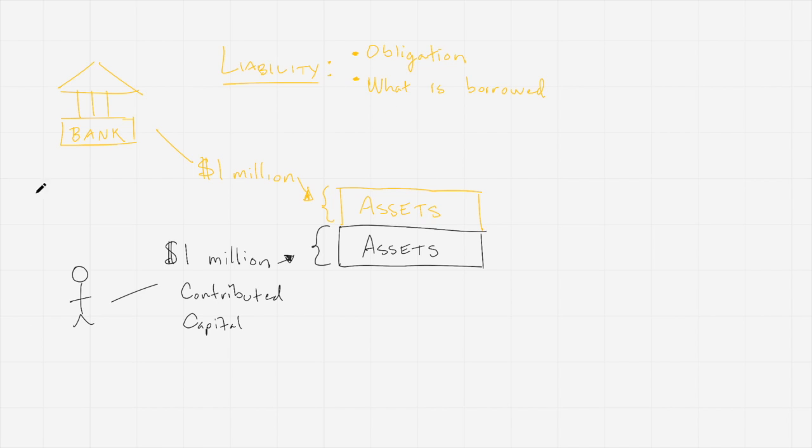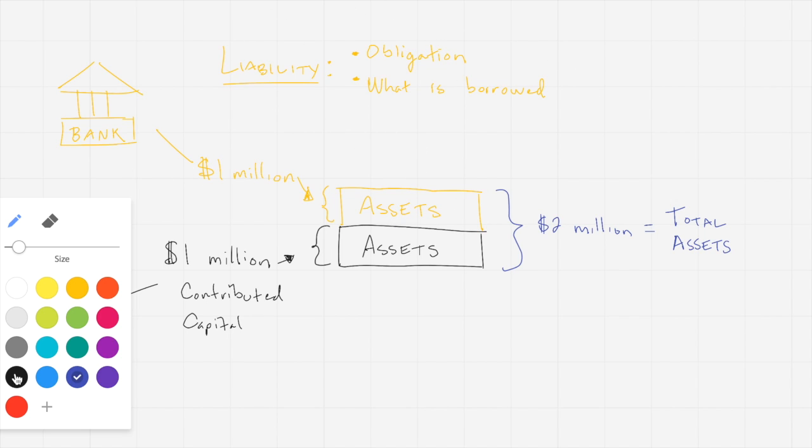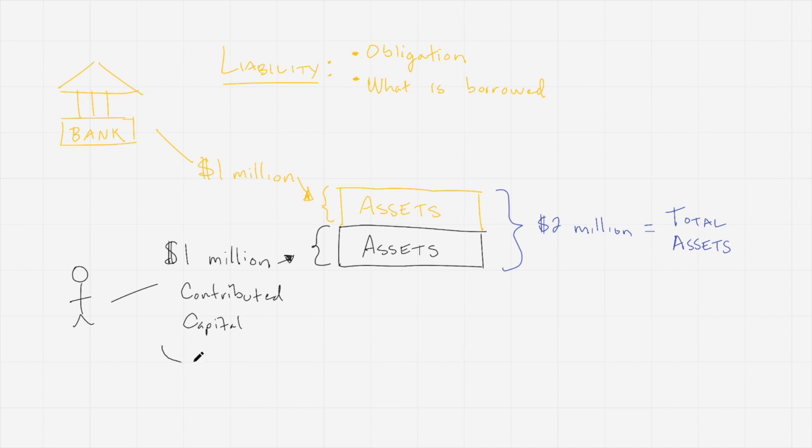So we now have two million dollars in total assets. So two million are our total assets. And those total assets, those two million dollars in total assets, are comprised of one million dollars in liabilities, that is the loan that we just took out, and one million dollars in equity.